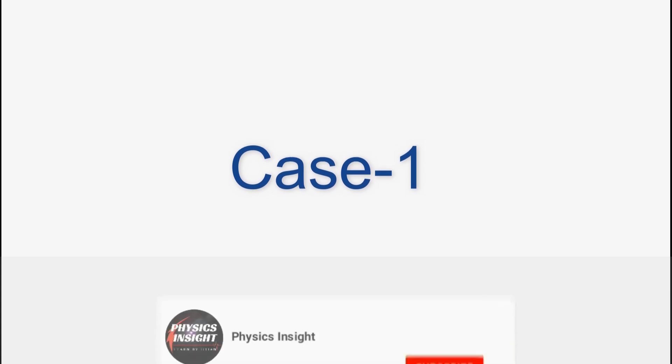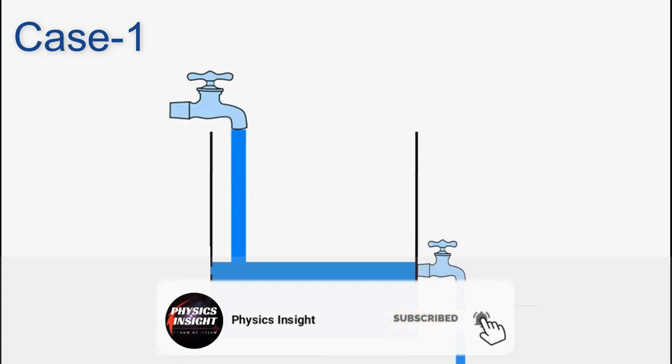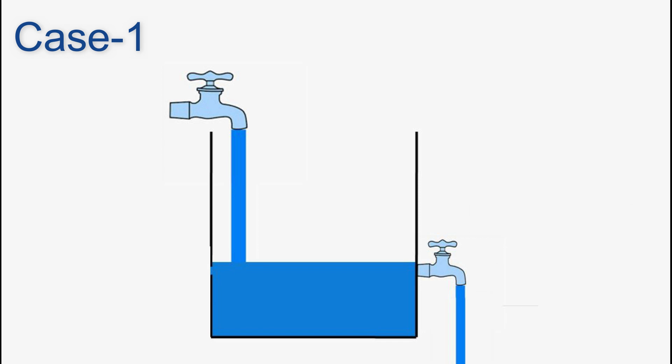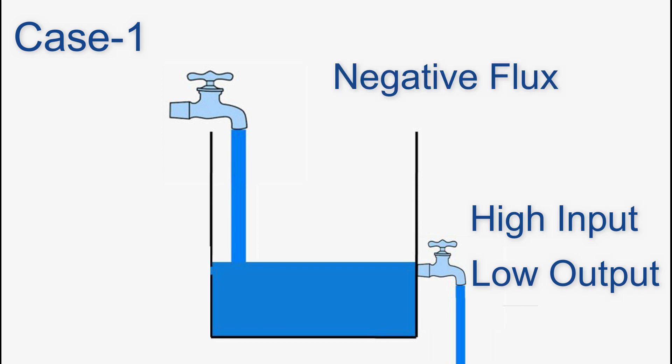Case 1. When we get less water from the outlet in comparison to the amount of water entering through the inlet. This case is termed as negative flux. This means some water is sinked out from other outlets. Now this system having negative flux acts as a sink.